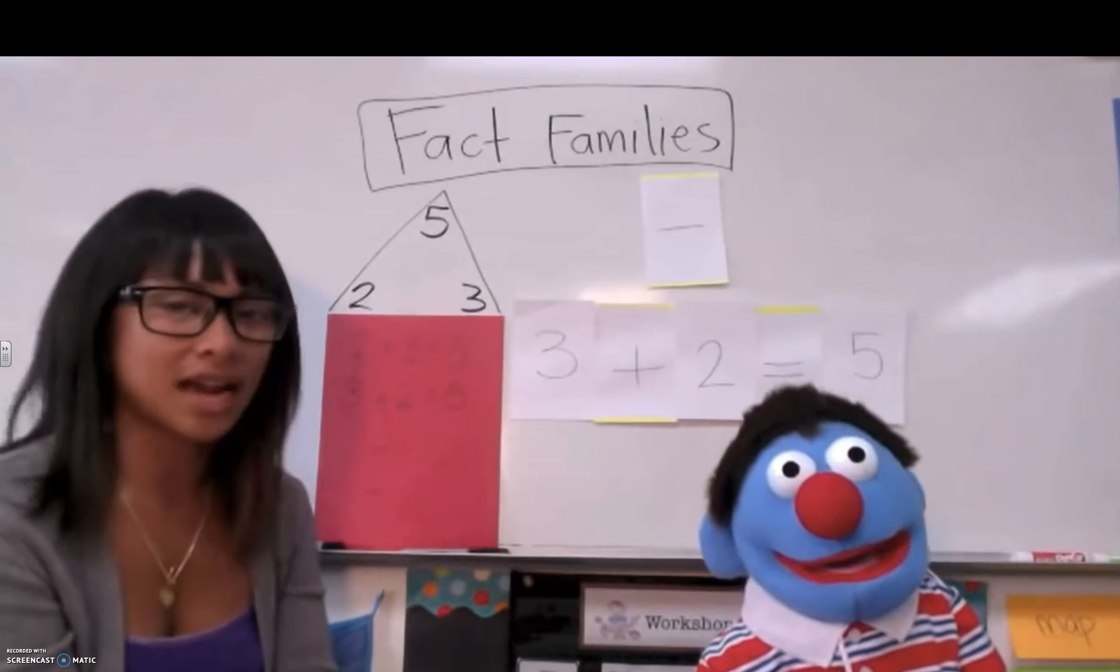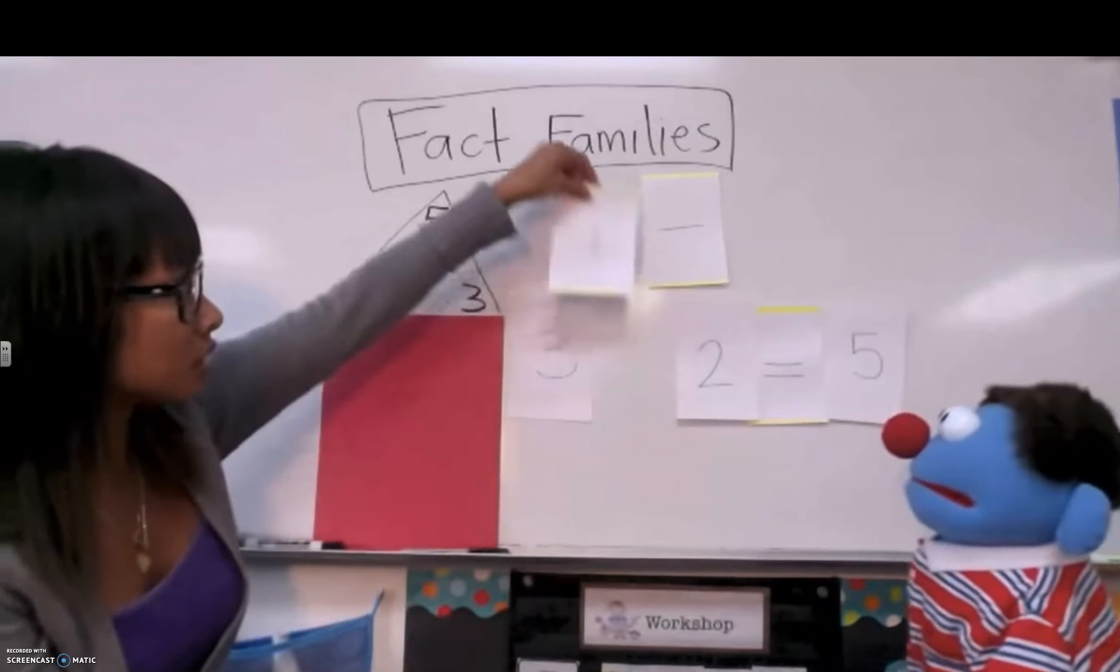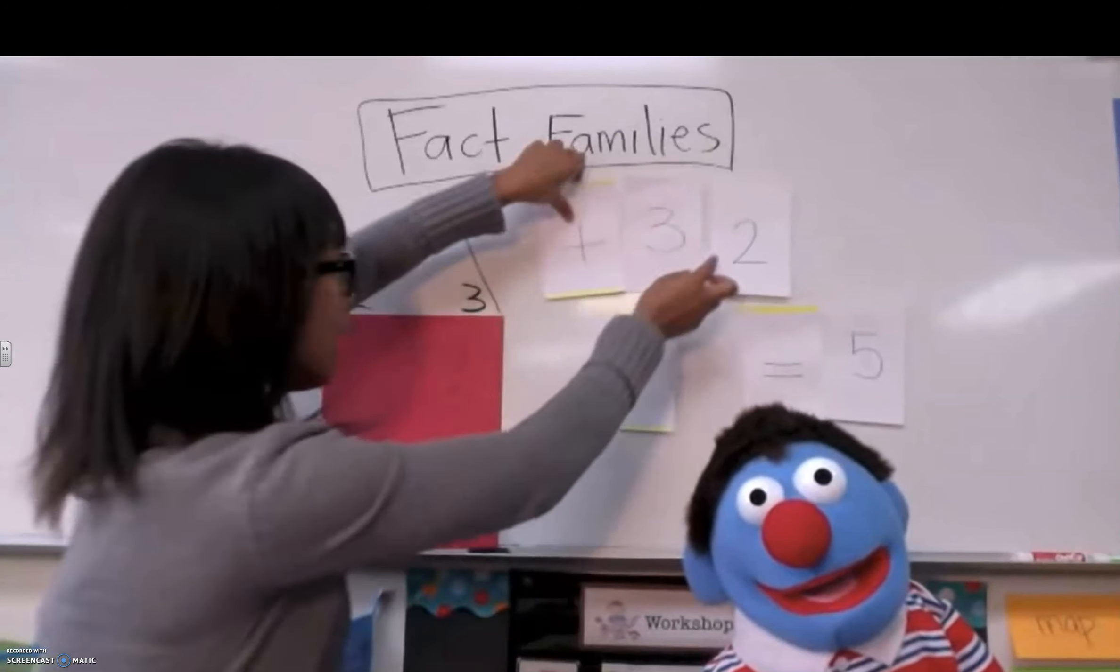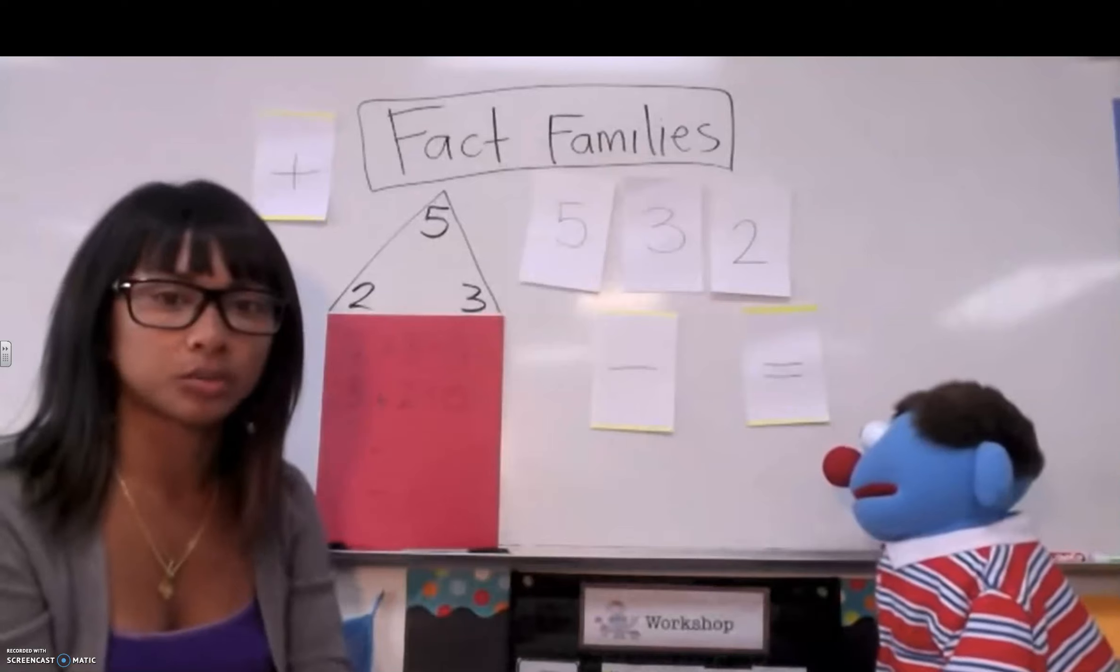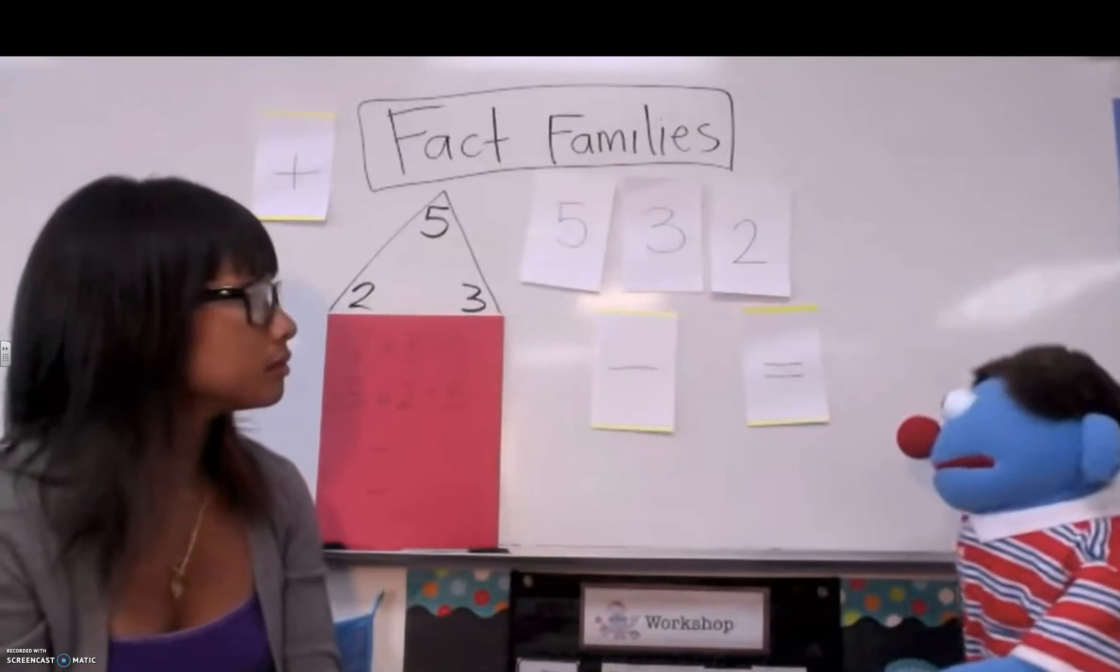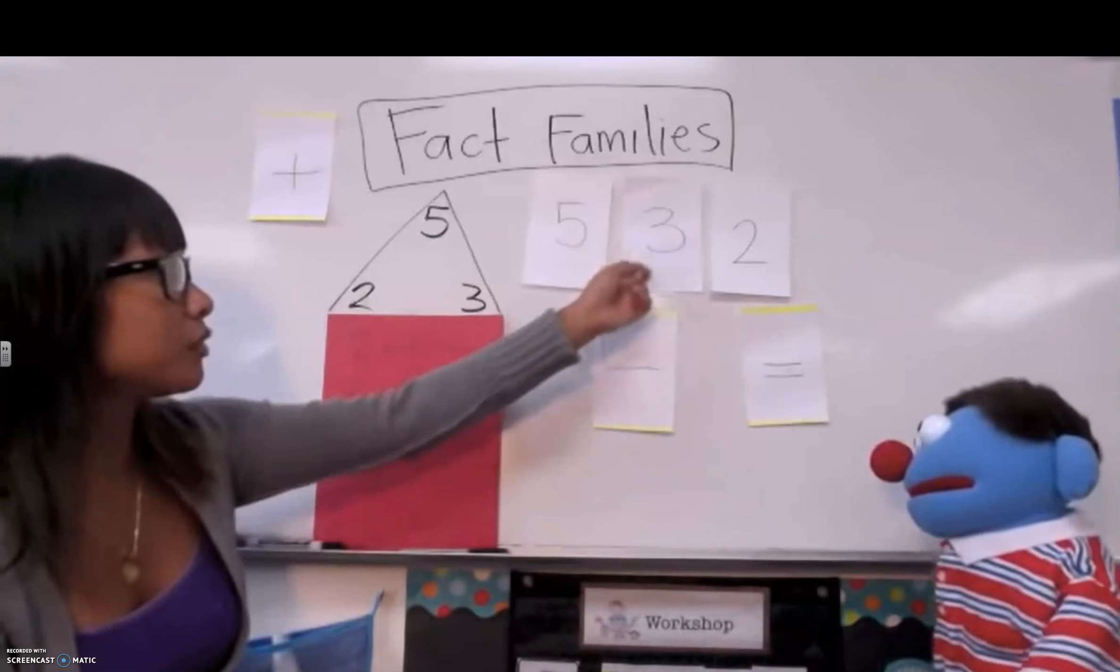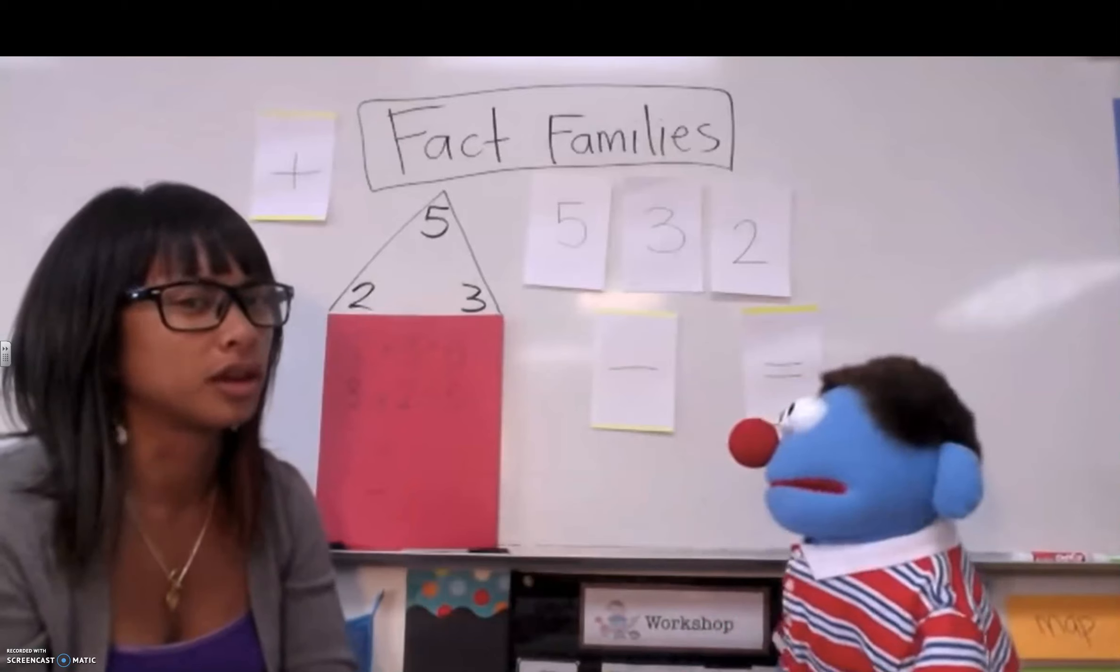So now there's another way that I can put the numbers together, but it's going to be a subtraction problem. Oh! Now it's getting tricky. So how would I put these numbers together to make a subtraction problem? Well, maybe if you just kind of switch it around. Let's see, I have the numbers five, three, and two, and I have to use the probably larger number, I'm going to think.